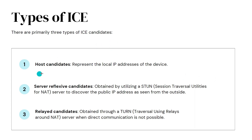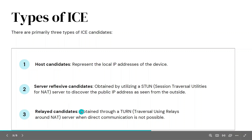The first type is host candidates. Host candidates means the connection is established directly — this represents the local IP address of the device. Then we have server reflexive candidates, which are obtained by utilizing a STUN server. This is the public IP address as seen from the outside. The third type uses a TURN server, and we call these relayed candidates. Relayed candidates are the last possible way devices can connect when direct peer-to-peer communication is not possible.